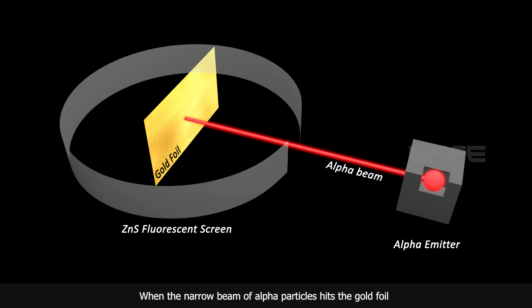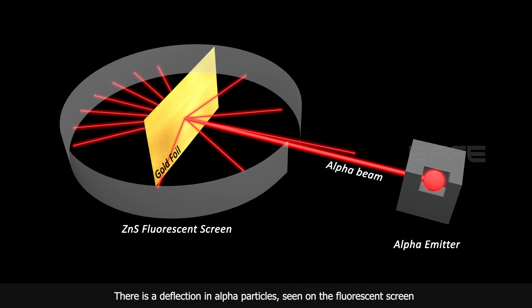When the narrow beam of alpha particles hits the gold foil, there is a deflection in alpha particles, seen on the fluorescent screen.